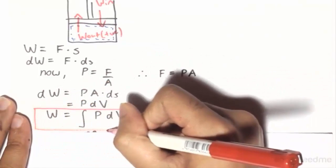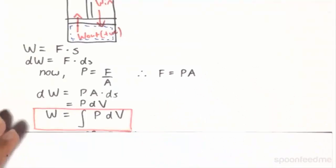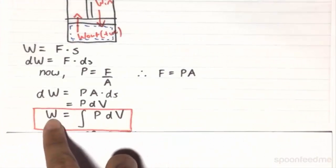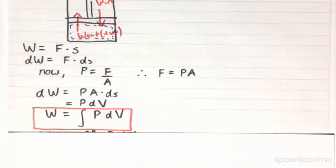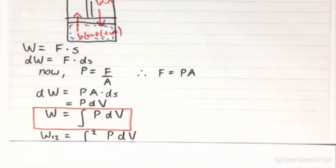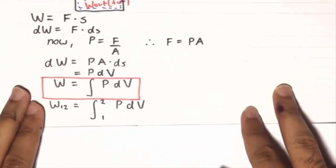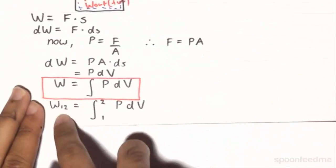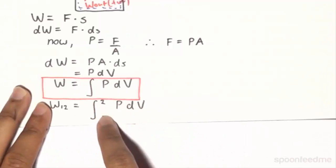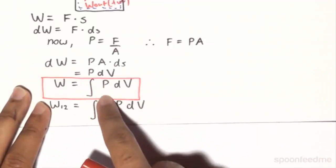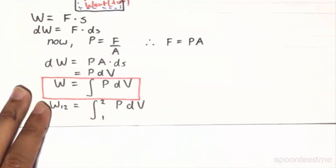No matter where, no matter what substance, no matter how it's working, it will always have work equal to the integral of P dV. So if you have the process between states 1 and state 2, we can replace that, we can put in the subscript of 1, 2, and we can replace the indefinite integral with the definite integral between 2 and 1 of P dV.